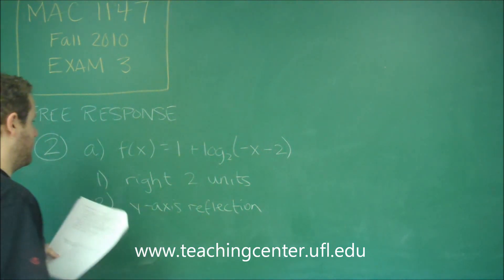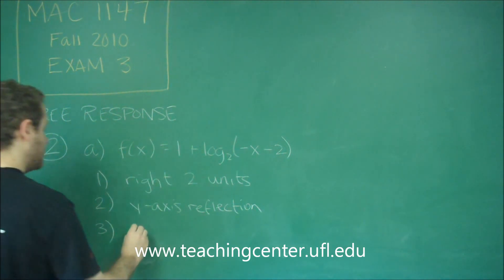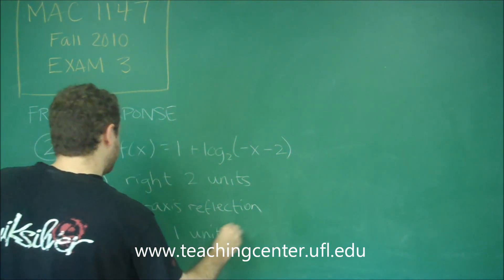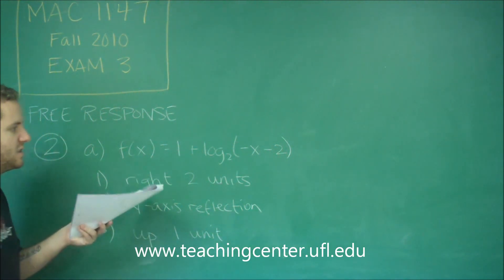For number 3 we have a vertical shift because we have a 1 plus so up 1. So that's all of our points.